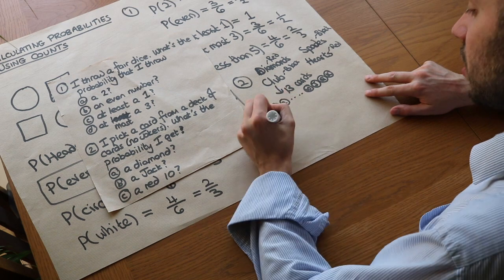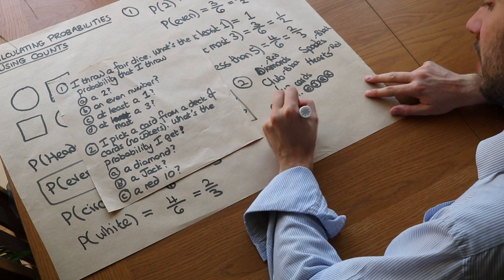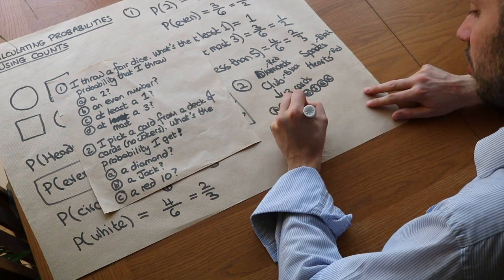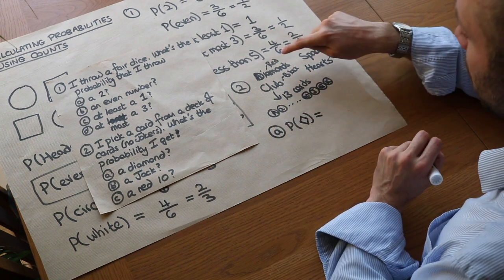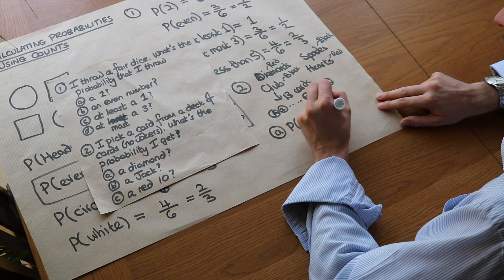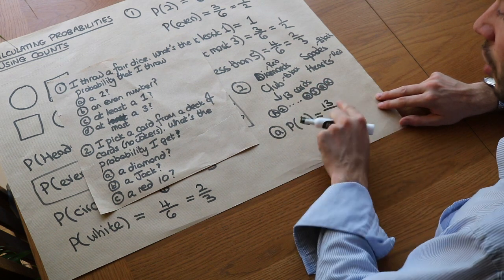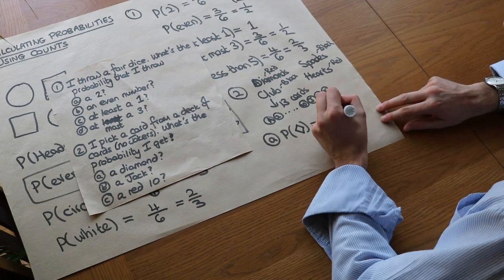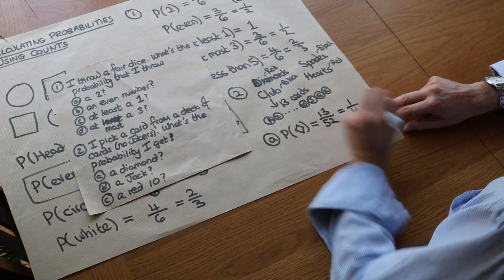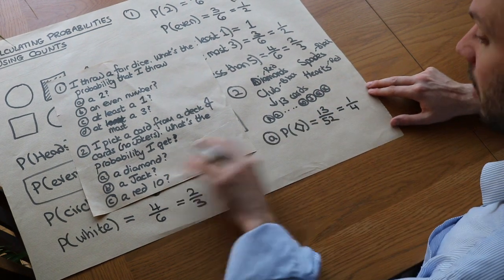So what's the probability of getting a diamond? Well, the probability of a diamond, this is the shape for a diamond, is, well, how many diamonds are there? Well, I said there's 13 of each suit. So 13 out of the total number of possibilities, the total number of cards, which is 52 cards. And that would simplify to a quarter. So a quarter of the time, we'd expect to get a diamond.